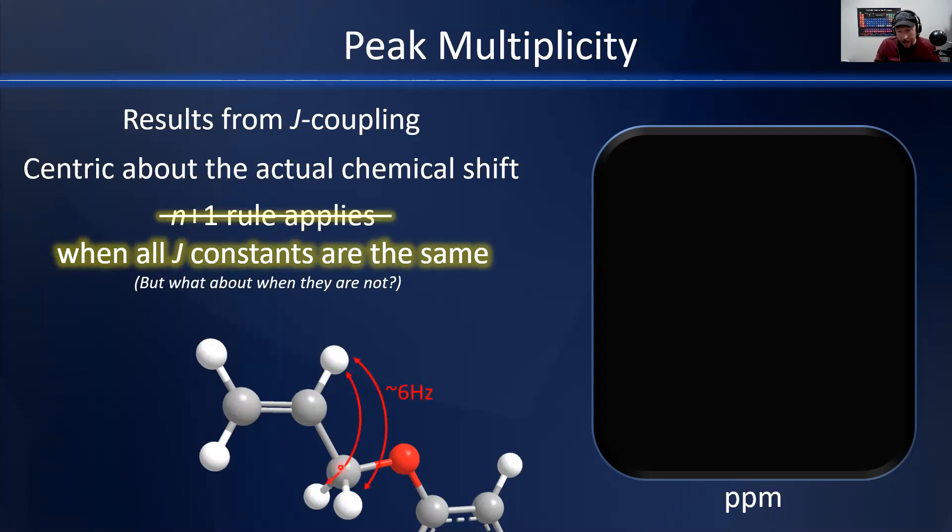Here we've got a bond that has free rotation, so we expect six hertz coupling constants between our interior vinyl and our methylene hydrogens. But those cis-alkene hydrogens, those cis-vinyl hydrogens, actually couple at about 12 hertz and the trans couple at about 18 hertz.